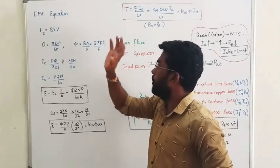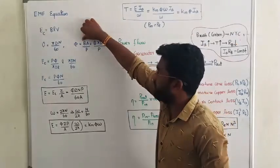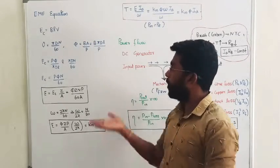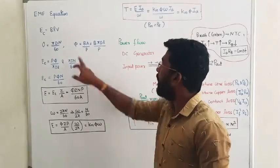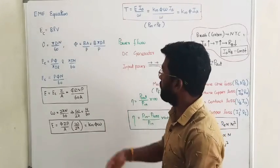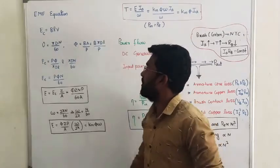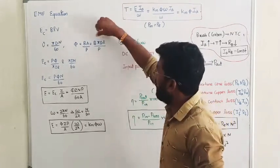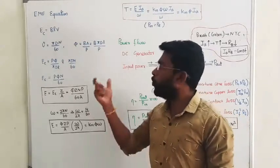Now I would like to know the flux per pole. The flux in general form is magnetic flux density into area. For flux per pole, we divide the total flux by the number of poles P. Here B is the magnetic flux density, and we need to find the area.